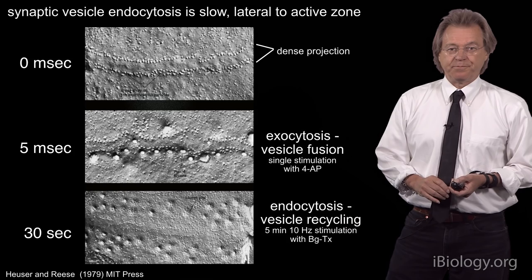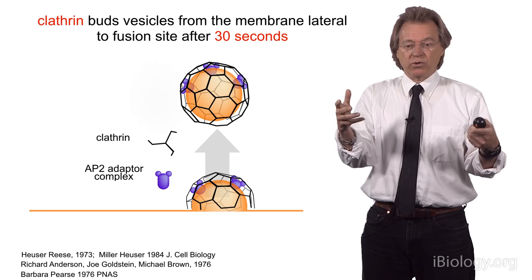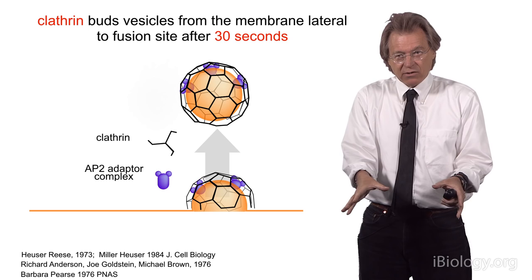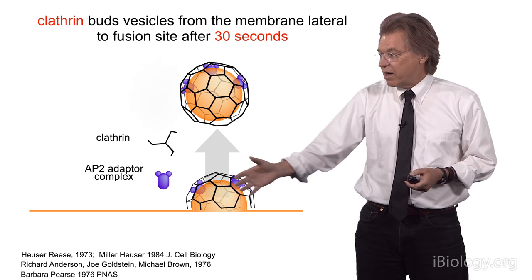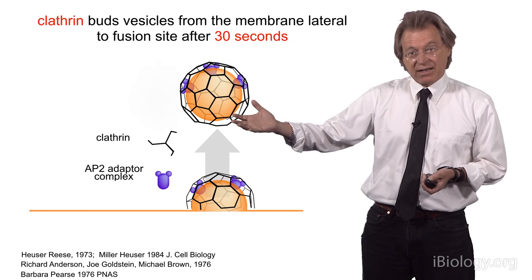Now we have a dogma of how synaptic transmission works: vesicles fuse with the plasma membrane, release neurotransmitter, and the proteins and membrane that make up that synaptic vesicle must be recycled. That recycling is via a clathrin-mediated mechanism — clathrin forms a superstructure, or geodesic dome, over a piece of membrane and removes it from the surface to regenerate a vesicle, after which the clathrin coat is removed.